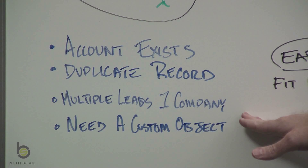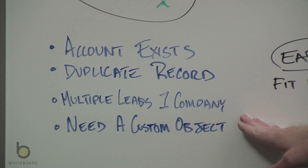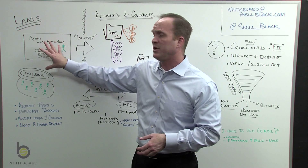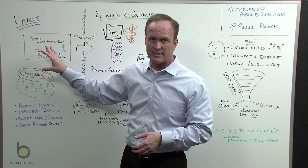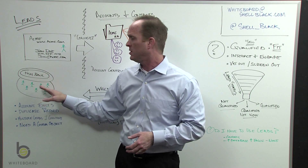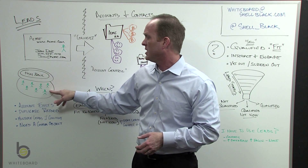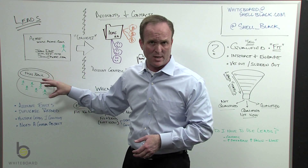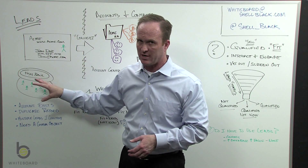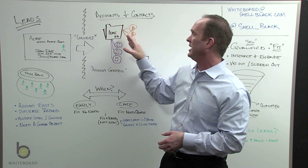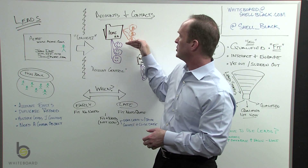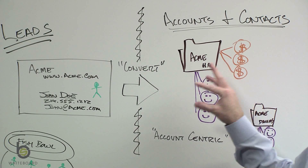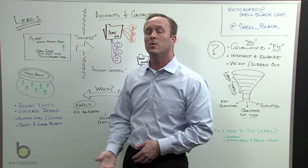Third: you go to a trade show and find 14 or 15 people at the same company, so you have 15 leads all from the same place. Because leads swim around in the fishbowl and can't be associated together, you may want to structure the data better — convert them into an account so you can put all 15 people under that account and keep the data organized. That might be a compelling reason to convert rather than waiting for a sale.